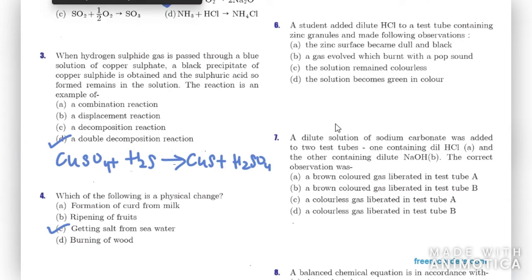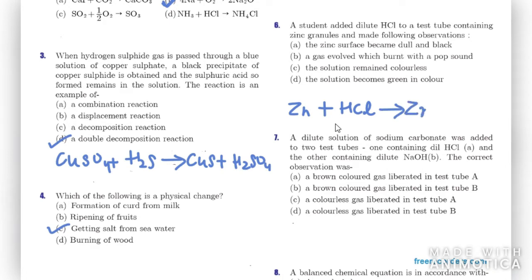Question six: a student added dilute HCl to zinc granules. Observations given: (A) zinc surface became dull and black, (B) a gas evolved which burned with a pop sound and the solution remained colorless, (C) the solution becomes green. When zinc reacts with HCl — metal with acid — a salt forms and hydrogen gas evolves, producing a pop sound. The right option is B.